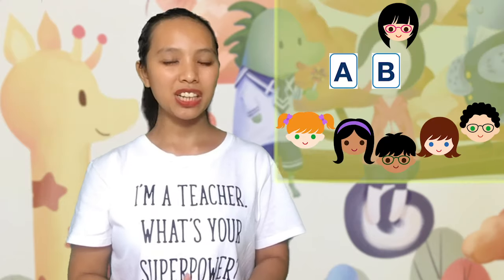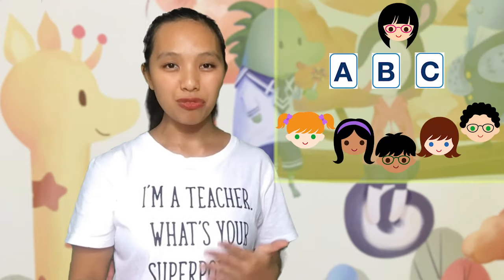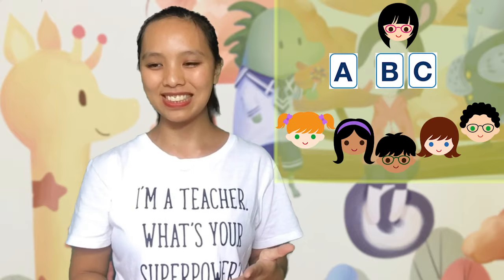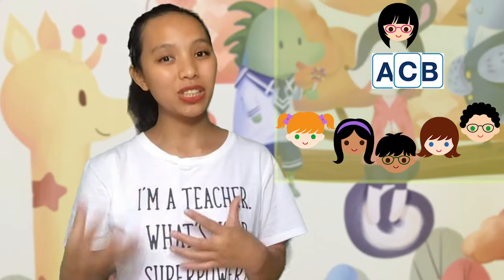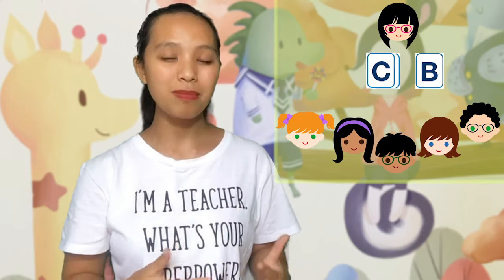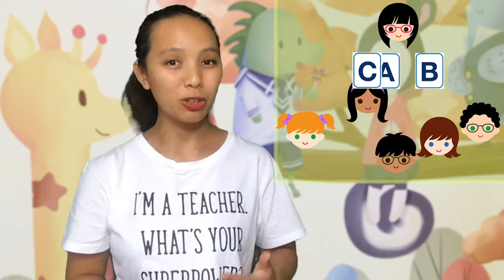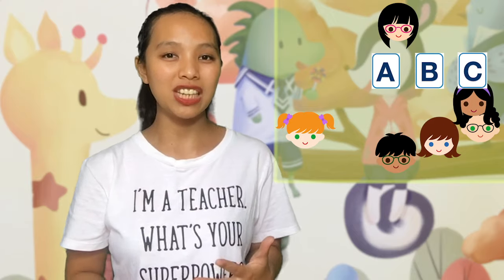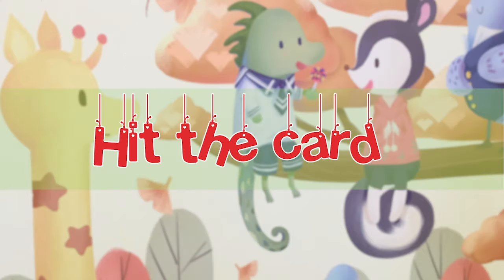Game 4 — Ordering: Stick the flashcards on the whiteboard and repeat the words with the students. Rearrange the cards and ask a student to come and arrange them back in the correct order. This game is best suited for teaching the ABCs or numbers.